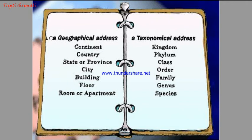For that we require, first of all, a geographical address — where does he live. Then the continent in which that person lives, then the country. If we know the country, we need to know in which state. If we talk about India, we say he lives in Rajasthan. Then we come to the city — in Rajasthan many cities are there, and if we talk about a particular city, we can take the name of Jaipur.